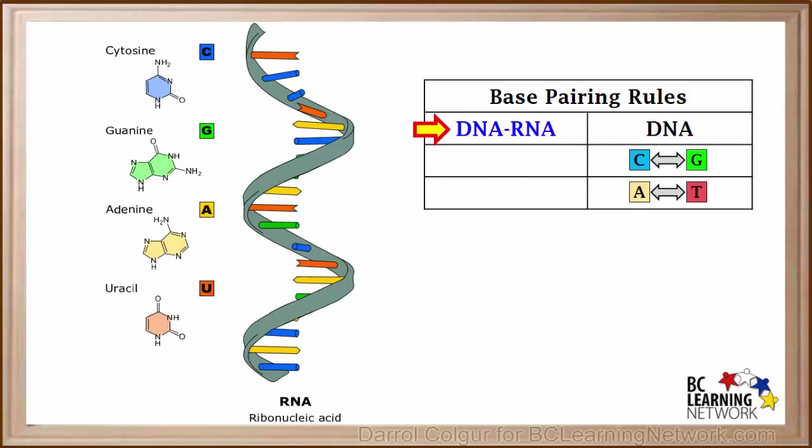Now we'll look at the base pairing rules for RNA. Unlike DNA, RNA does not have a double helix. It is only a single strand. Therefore bases on RNA do not pair with each other.